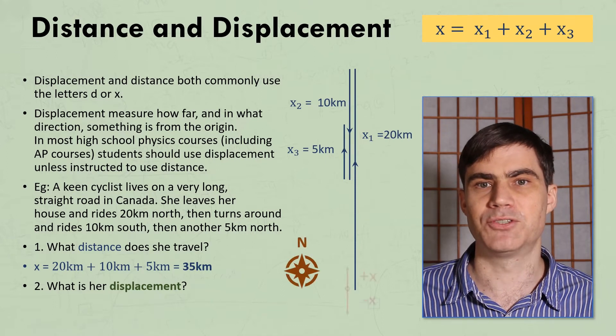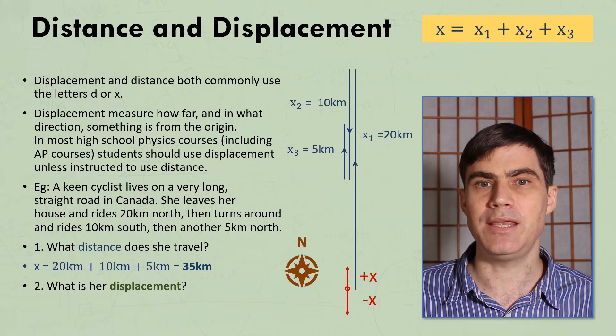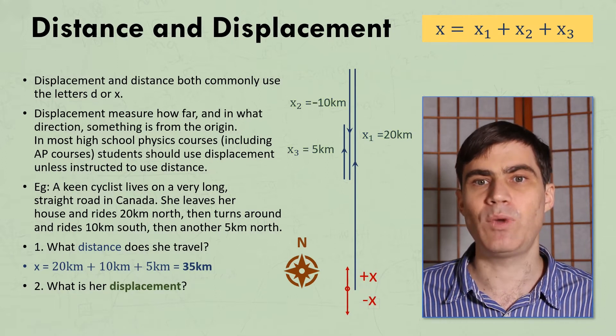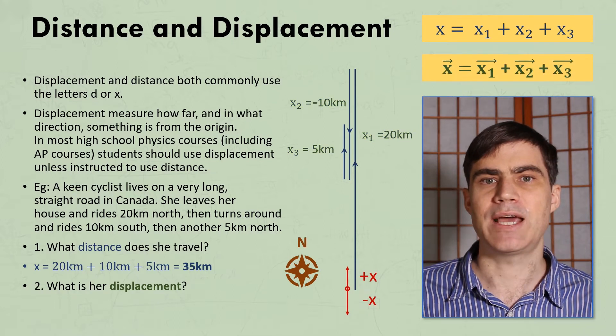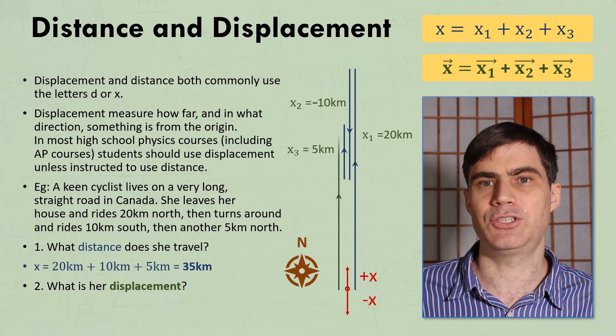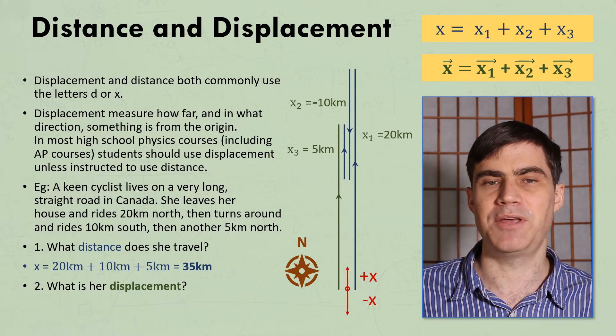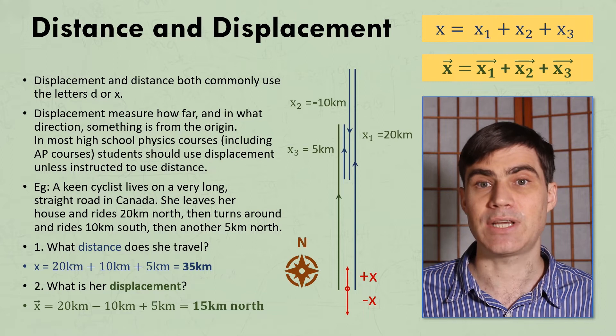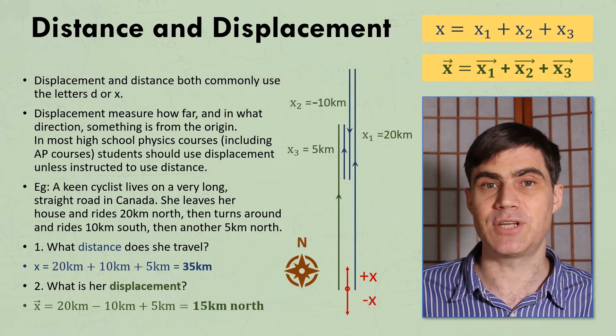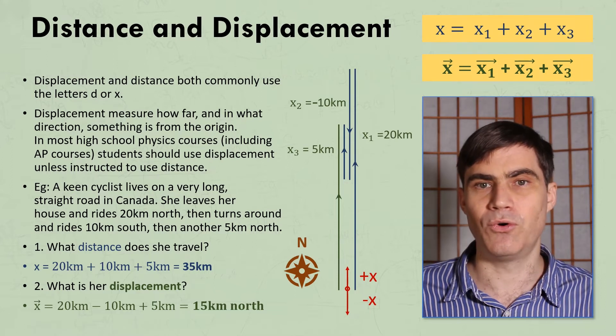So let's assume that north is positive. Now we need to make the 10 km negative, and then we can add them all up. That then measures how far she ends up from her starting location, giving us a total displacement of 15 km. And since, as a vector, displacement always needs a direction, we'll give the final answer as 15 km north.